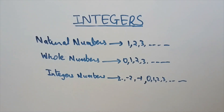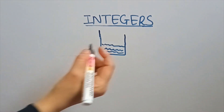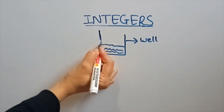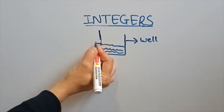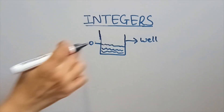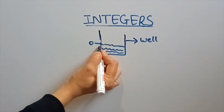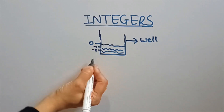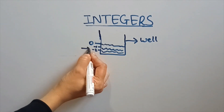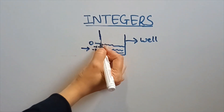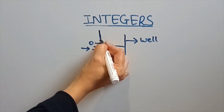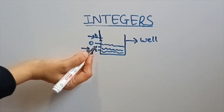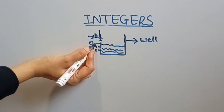I will try to explain with the help of this example. Suppose this is a well — you mark the water level as 0. Now during summer, you observe that this water level goes down: suppose minus 1, minus 2 — it comes here at minus 2. And when rain comes, you observe that the water level goes up, suppose here at 2.